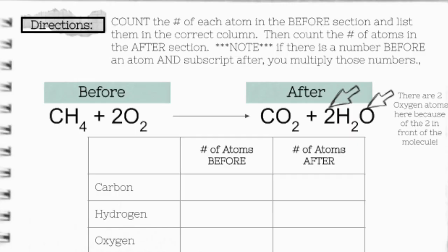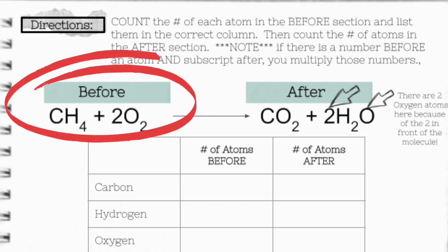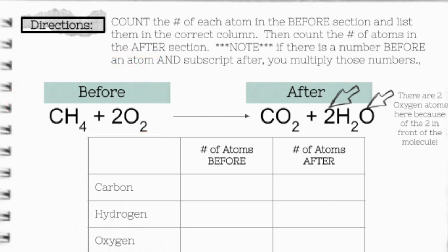Now that we've observed and thought about what those atoms are doing, we're going to look more closely at that chemical reaction and the atoms in the chemical reaction. Our directions tell us to look at the chemical reaction in two parts. We're going to look at the left-hand side and call it the before side, and we're going to count the number of atoms in that section.